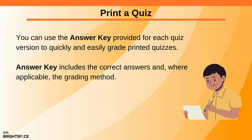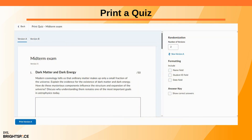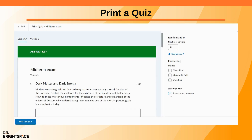You can use the answer key provided for each quiz version to quickly and easily grade printed quizzes. It includes the correct answers and, where applicable, the grading method. On the Print Quiz page, select Show Correct Answers, then choose the required version tab and print the selected version.